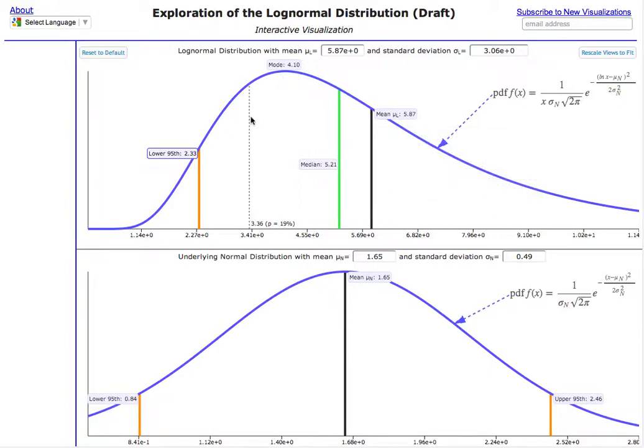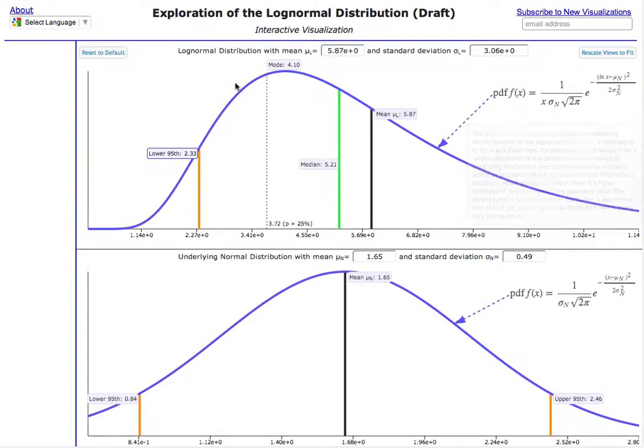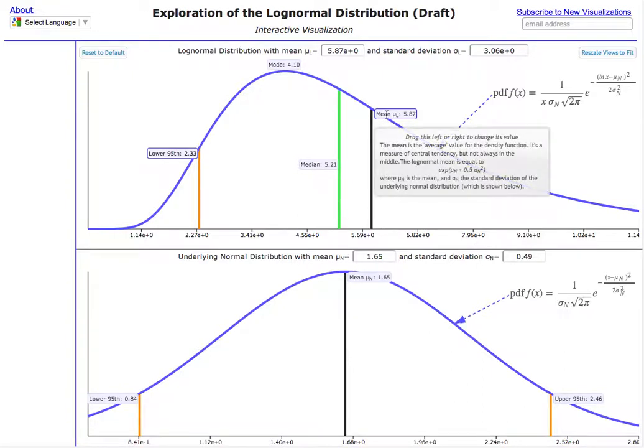And actually, the parameters of the lognormal are calculated from the parameters of the normal, but you don't see them straight here. There's a closed form formula for both the mean and the standard deviation of the lognormal. In terms of the underlying normal for the mean, you can see, I'll say what it is, it's basically the exponential of mu sub n plus one half times the square of the standard deviation.